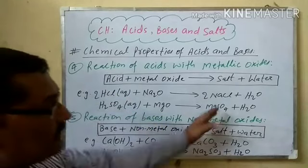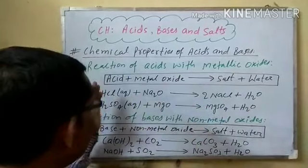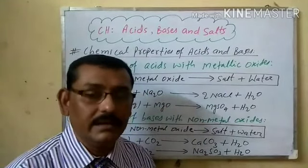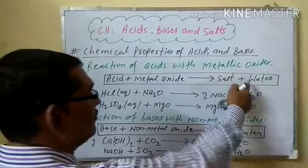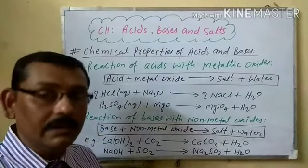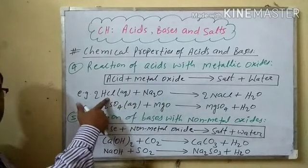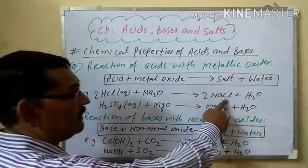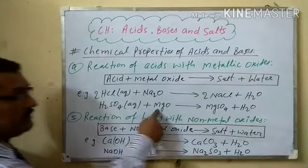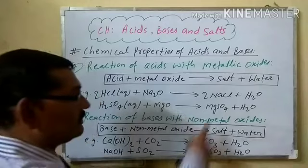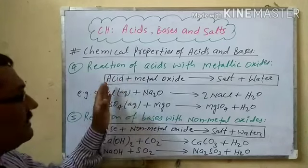For example: hydrochloric acid plus sodium oxide gives sodium chloride (salt) and water. Similarly, sulfuric acid plus magnesium oxide gives magnesium sulfate and water. So acid plus metal oxide gives salt and water — this is similar to a neutralization reaction.